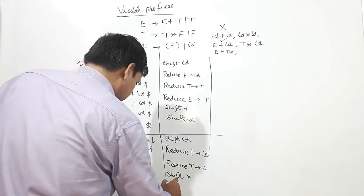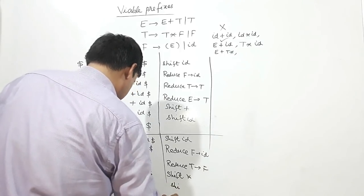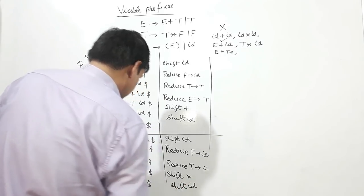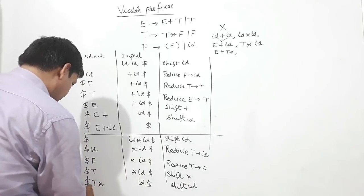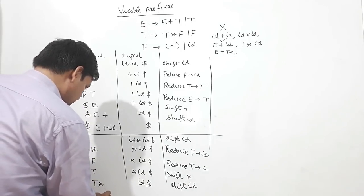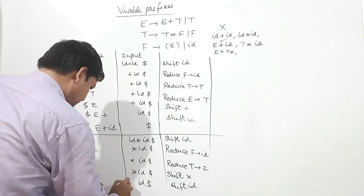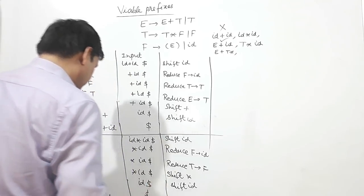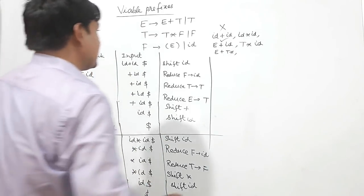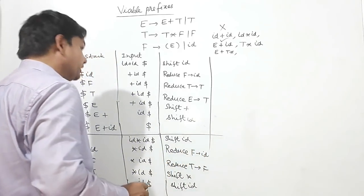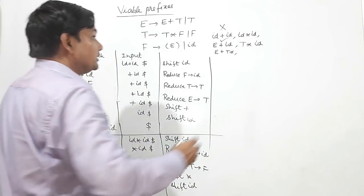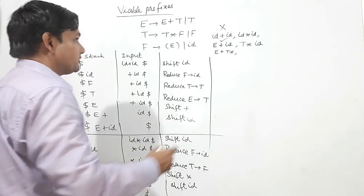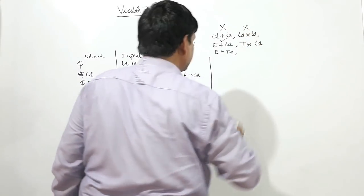So it will be dollar T star, then ID here, dollar is here. Now shift ID — dollar T star ID, dollar. T star ID — ID dot ID star ID is not appearing on a step, so this is not a viable prefix.